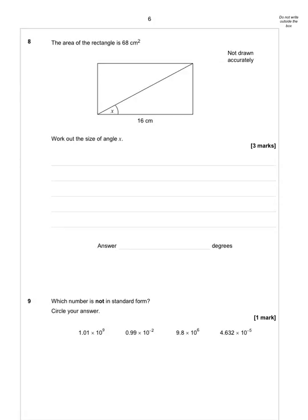First I'm going to think about the area. I know the area of a rectangle is base times height, so I've got to work out what the height is here. So I know that 16 times the height has got to equal 68. So the height is 68 divided by 16.